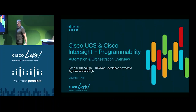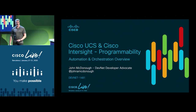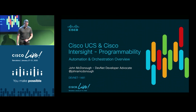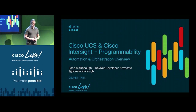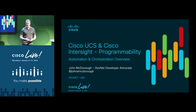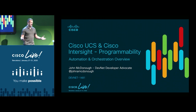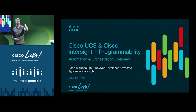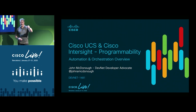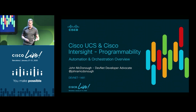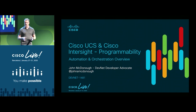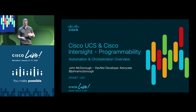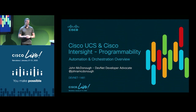This is Cisco UCS and Cisco Intersight programmability, automation and orchestration overview. We'll really be talking about programmability and orchestrating that programmability. There are a lot of tools out there. We have a demo over in the zone called a multi-domain demo — not ACI multi-domain orchestrator, but a multi-domain orchestrator using Cisco's AO, or action orchestrator.